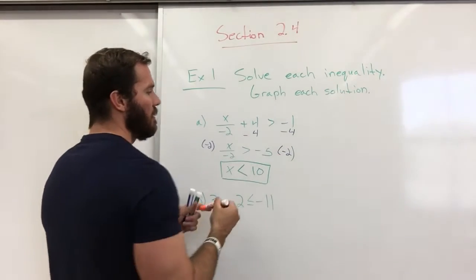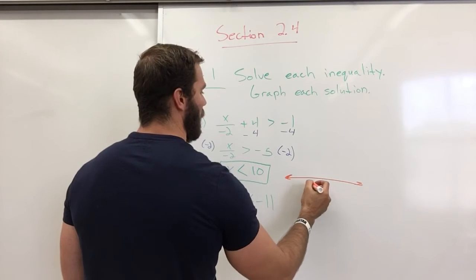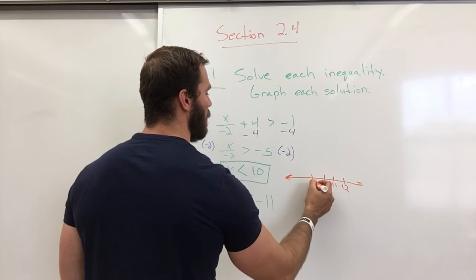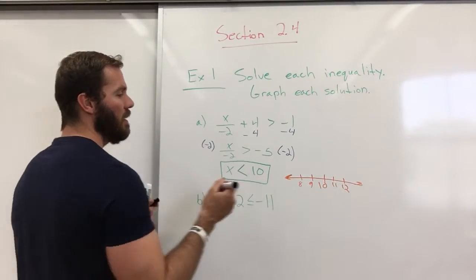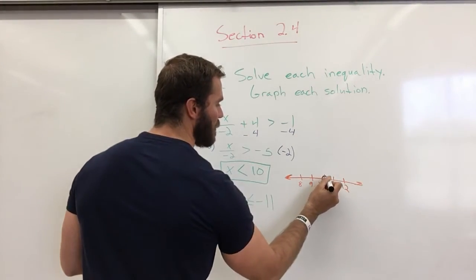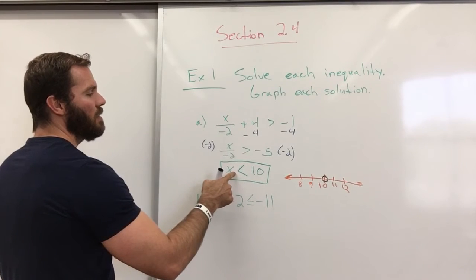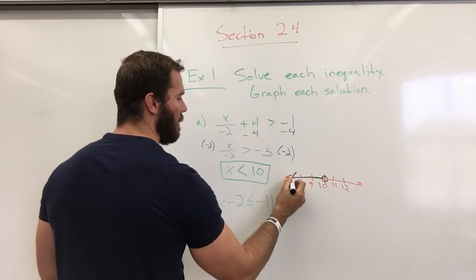To graph that, I'll make my number line. And we'll have 10, 11, 12, we'll go 9, 8. Because it does not say that it is equal to 10, it's just going to be an open circle. And we're including all the numbers that are less than 10. The solution is everything less than 10.